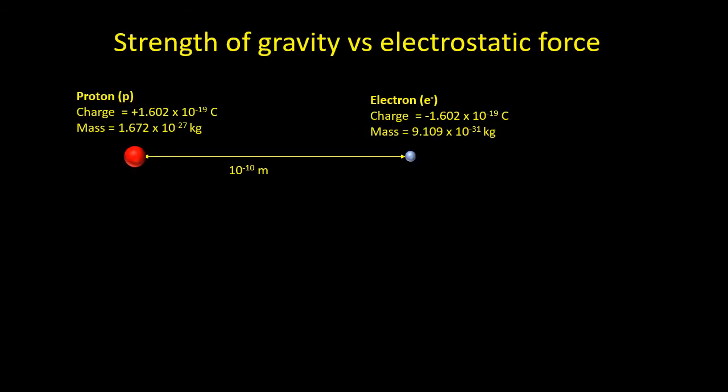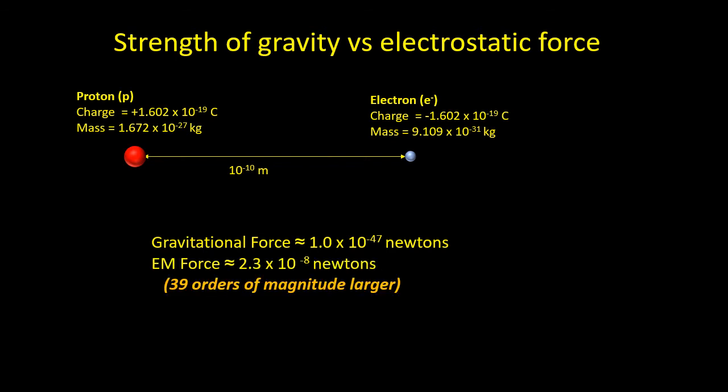Gravity is extremely weak compared to the electrostatic force. If we take the example shown of a hydrogen atom which consists of a single proton orbited by a negatively charged electron, the mass of a proton is a minute 1.672 times 10 to the minus 27 kilograms. The mass of electron is nearly 2,000 times smaller. If we assume that the proton and the electron are 10 to the minus 10 meters apart, which is the typical separation in a hydrogen atom, then the gravitational force between the electron and proton is an almost unimaginably small 10 to the minus 47 newtons.